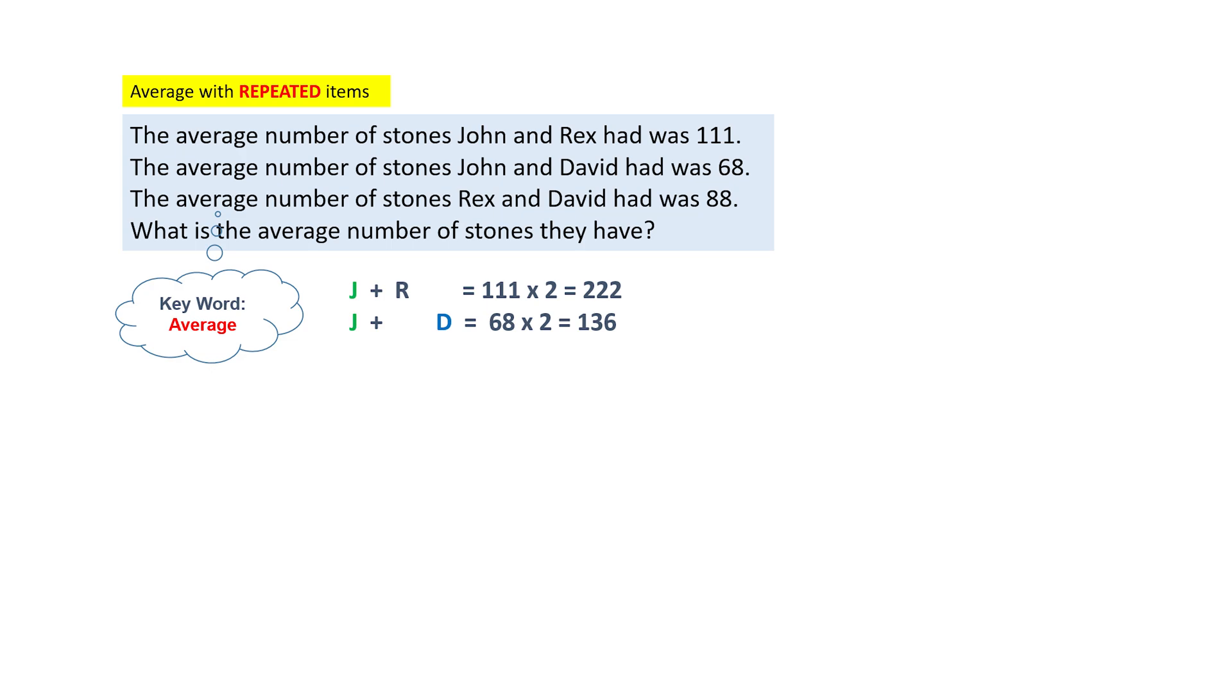Next, the average number of stones Rex and David had was 88. So I'm going to write R plus D equals to 88 times 2, which is 176.